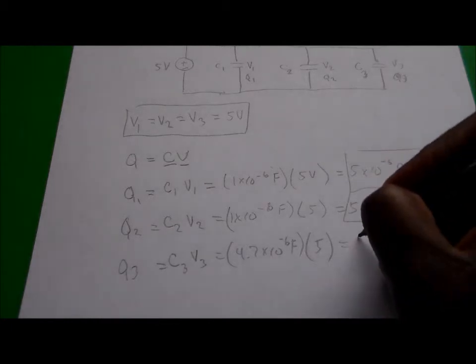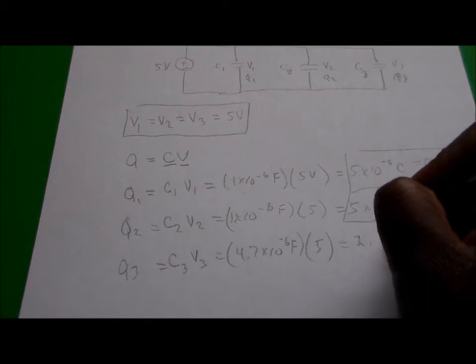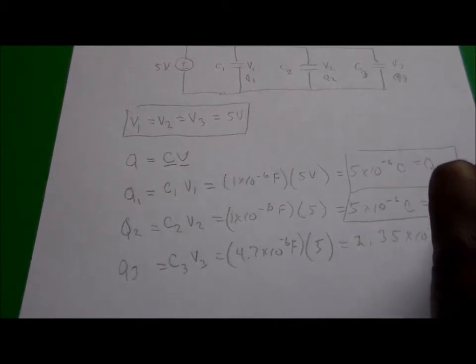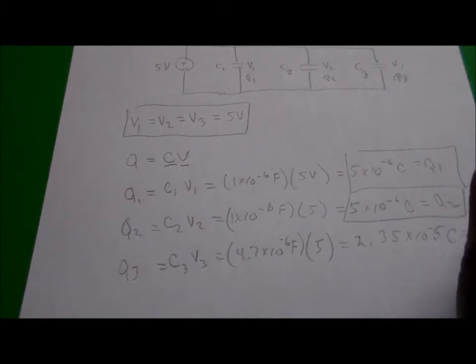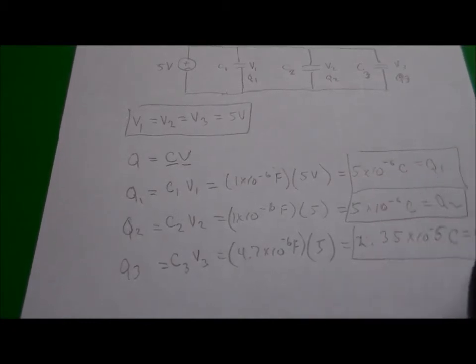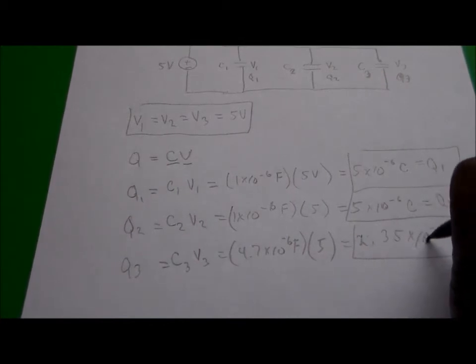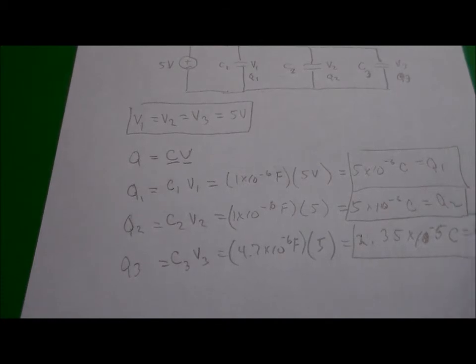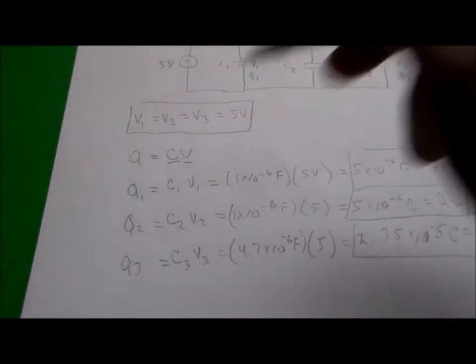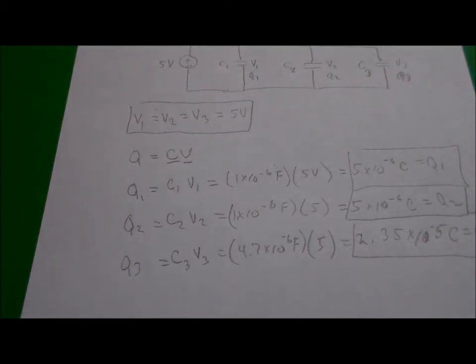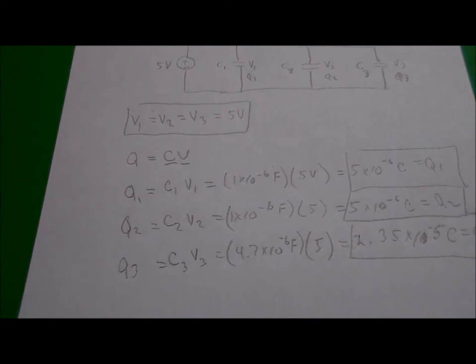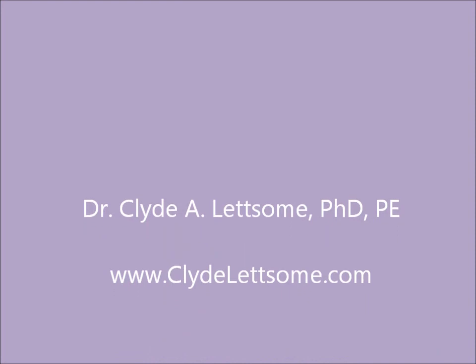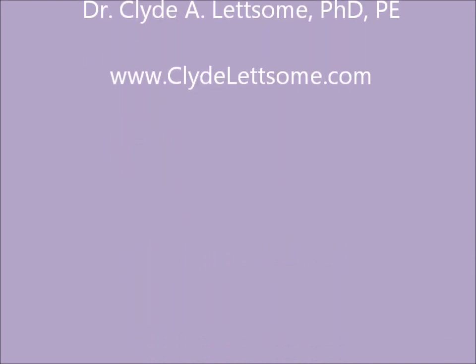And we end up with 2.35 times 10 to the minus 5 coulombs as the answer for the charge across capacitor number 3. So that's 2.35 times 10 raised to the negative 5 power coulombs across capacitor number 3.